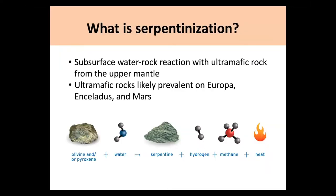Serpentinization is an interesting process that isn't extremely common on the crust of the Earth. It is a subsurface water-rock reaction with ultramafic rock from the upper mantle. Ultramafic is a type of igneous rock that exists below the crust, so typically it's not on the surface of Earth — only in little outcroppings that peek through. However, this is important for astrobiology research because ultramafic rocks are prevalent on other worlds such as Europa, Enceladus, and Mars, potentially. This process uses olivine or pyroxene in water to create serpentine, hydrogen, methane, and heat — and methane is very useful for certain metabolic processes.